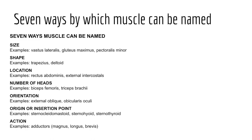Next, muscles may be named by shape — many muscles have geometrical shapes and are referenced as trapezius, deltoid, teres, and rhomboid, among others. Further, muscles may be named by their location; examples include the temporalis, occipitalis, and tibialis muscles. Other muscles may be named by the number of heads or origins they have — examples include the biceps, triceps, and quadriceps muscles.